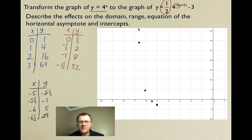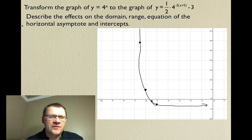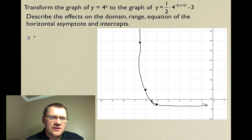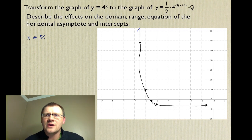So the graph looks something like this, getting closer and closer to a horizontal asymptote. Looking at the effects: the domain hasn't changed — it's still all real numbers. The range still has no maximum since the function increases without bound.